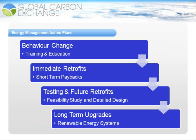The second level is immediate retrofits. These are retrofits with short-term paybacks and little to no impact on the environment of the building. These could be quick lighting retrofits or ensuring that the HVAC system is correctly controlled using timers. They have very short-term paybacks and are very easy to implement.